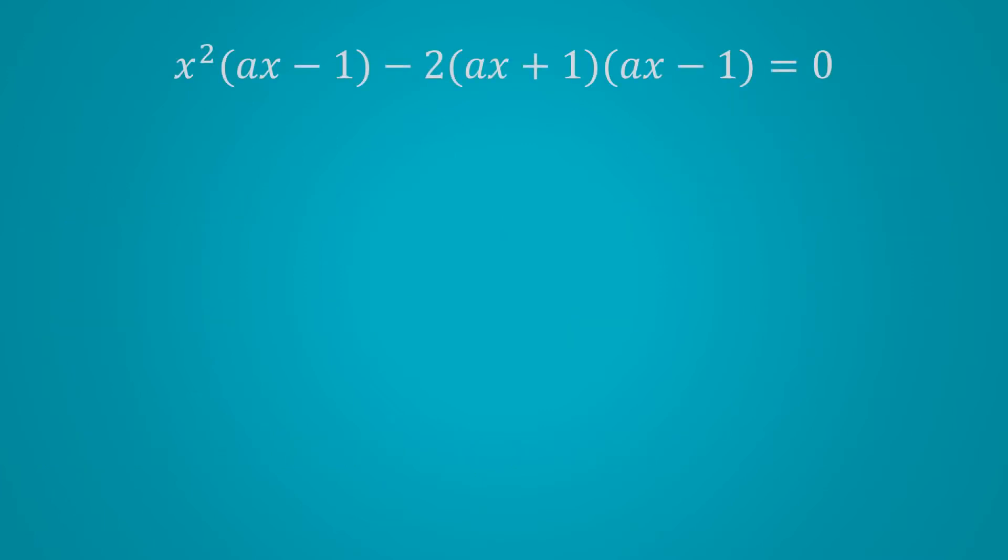The next few steps are pretty standard algebra. So let's try moving through it more quickly. First, we can pull out the common factor of ax minus 1 and then equate both of the factors to 0. On the left, by completing the square, we get the first two roots. And on the right, x is just equal to 1 over a, which is the third root.